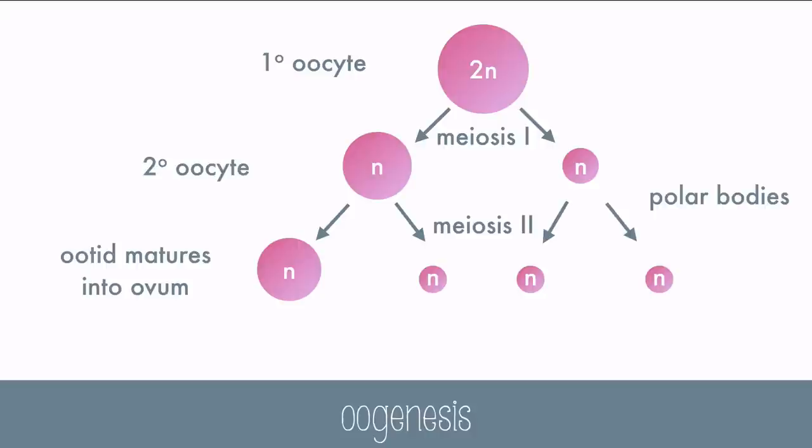This ovum will have all the organelles, including the mitochondria. Even though only one mature ovum is created by the one oocyte in oogenesis, females are still born with millions of cells, and will release hundreds in their lifetime.